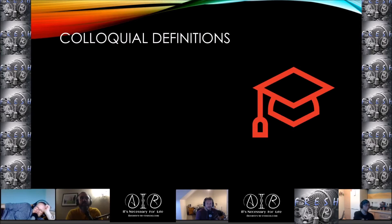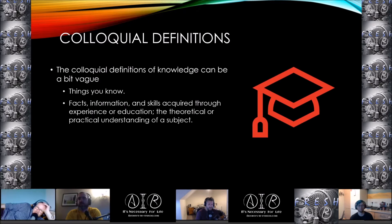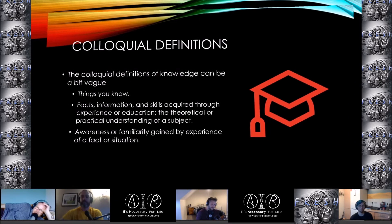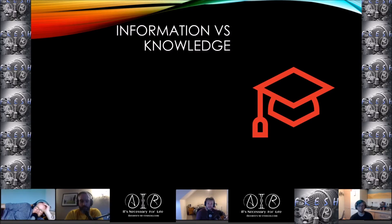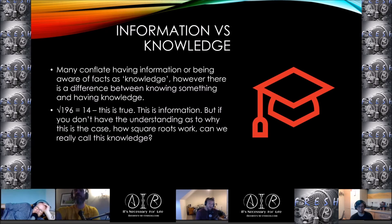We also have the colloquial definitions of knowledge, which can be more than a little vague: things you know; facts, information and skills acquired through experience or education; the theoretical or practical understanding of a subject; awareness or familiarity gained by experience of a fact or situation. Here we need to distinguish between information and knowledge. Many conflate having information or being aware of facts with knowledge. The square root of 196 is 14 — this is true, this is information. But if you don't have the understanding of why this is the case or how square roots work, can we really call that knowledge?